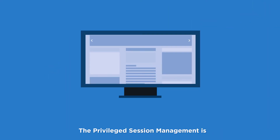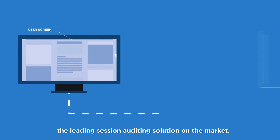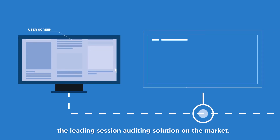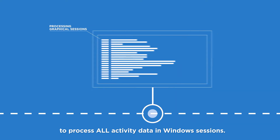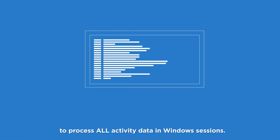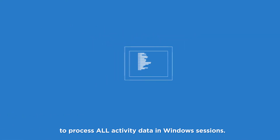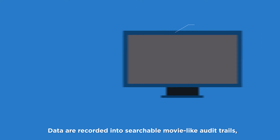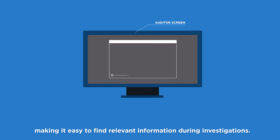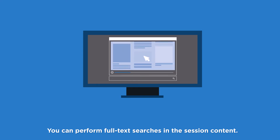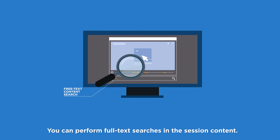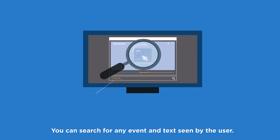Privileged Session Management is the leading session auditing solution on the market. It provides optical character recognition to process all activity data in Windows sessions. Data is recorded in searchable, movie-like audit trails, making it easy to find relevant information during investigations. You can perform full text searches in the session content and search for any event and text seen by the user.